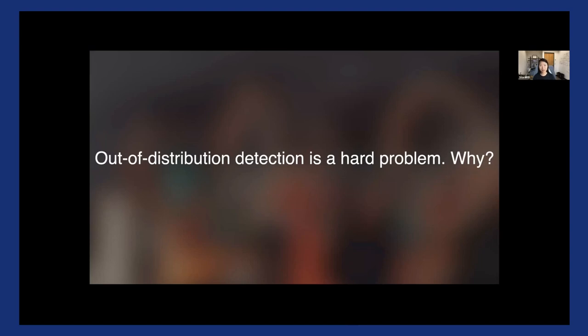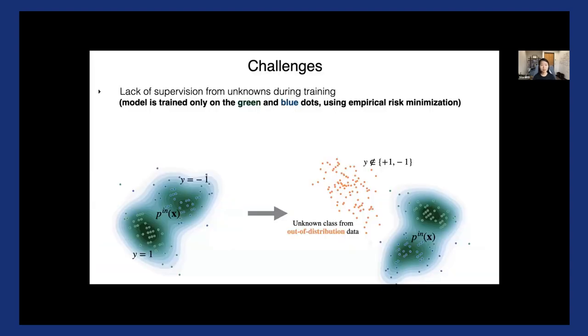And before we get into the methodology, I just wanted to spend a couple of slides explaining the why. So the first challenge is the lack of unknowns during training time. The model is typically trained only on the in-distribution data. In this case, the green and blue dots using empirical risk minimization. And it can be difficult to anticipate where these orange dots could emerge in advance, because there can be a huge space of unknowns, especially if you extrapolate this to be the high-dimensional space.